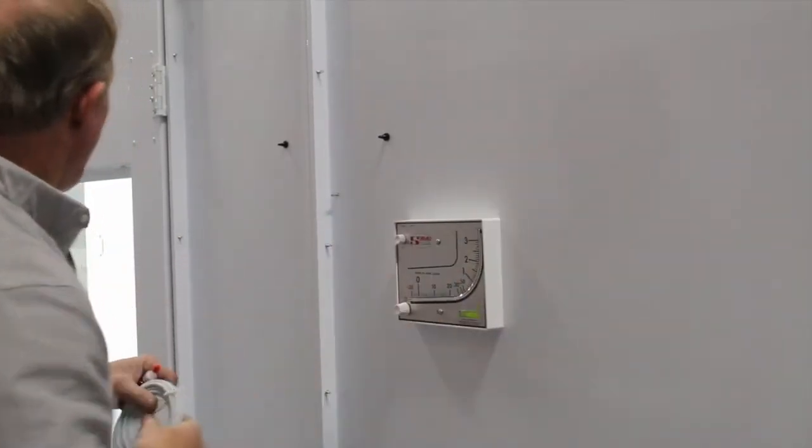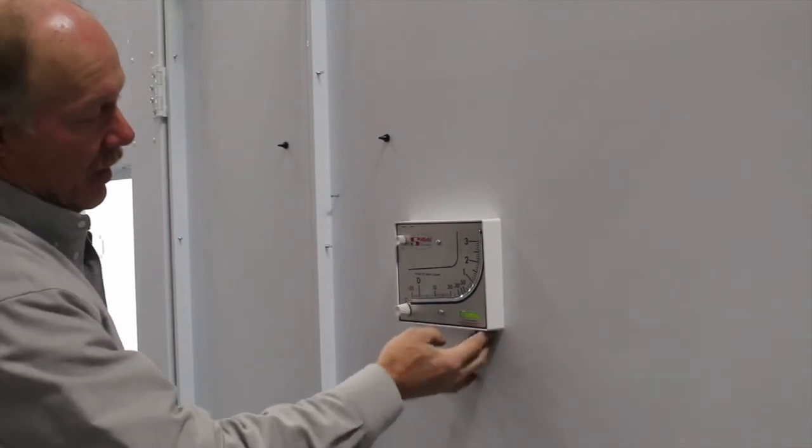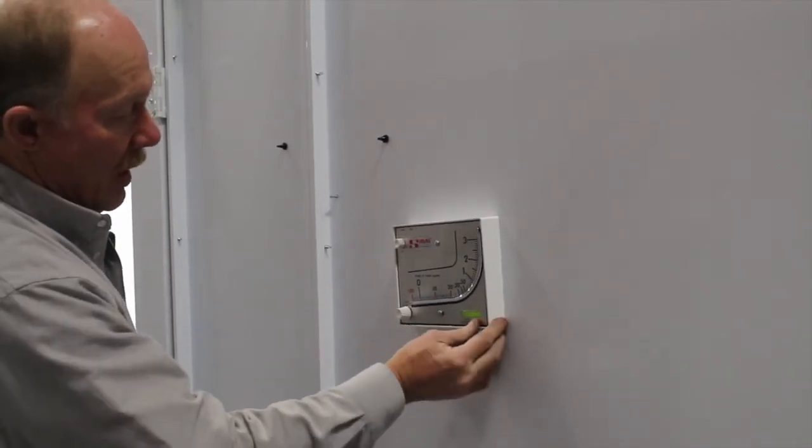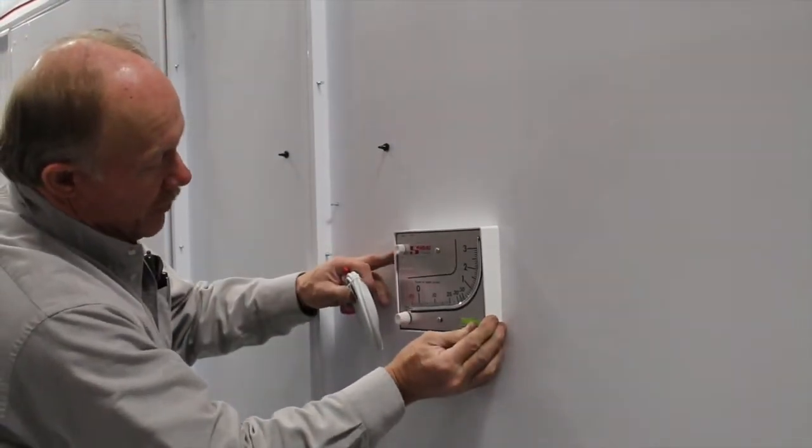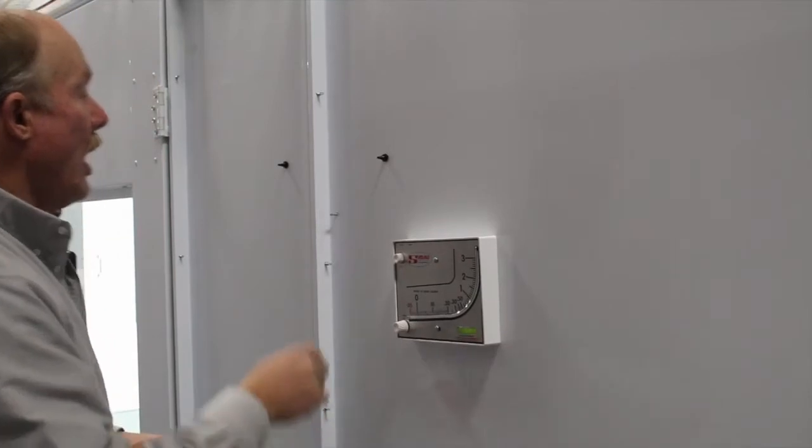This is the exhaust printer. You can see the door here. Pay very close attention to the level here. Make sure it's level. It's got an adjustment in the bottom so you can adjust it. Make sure that's level.